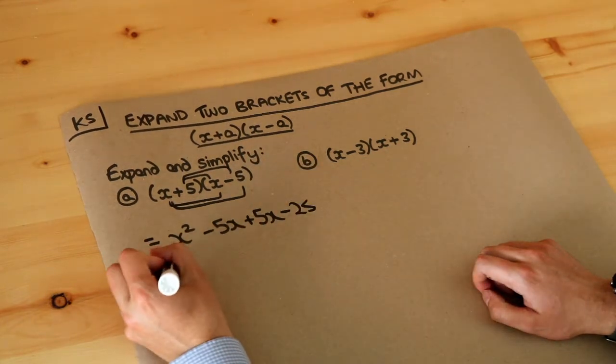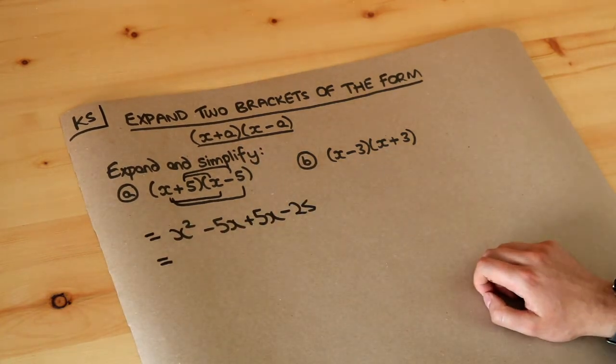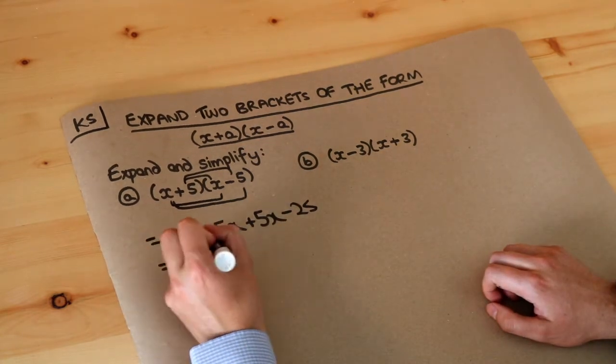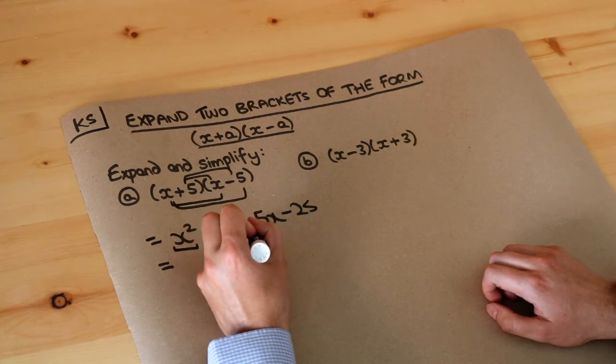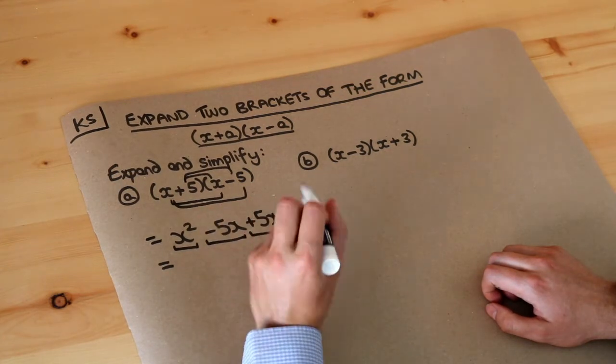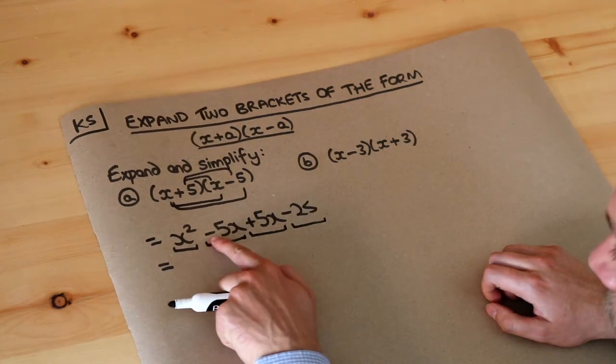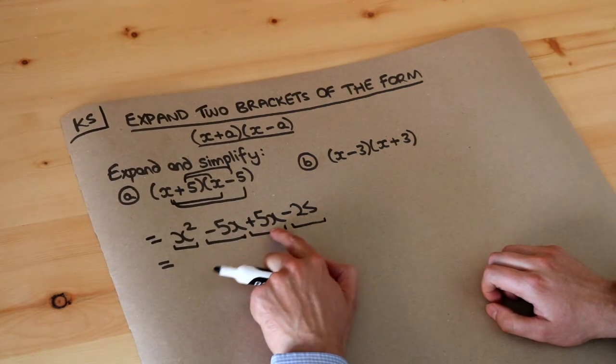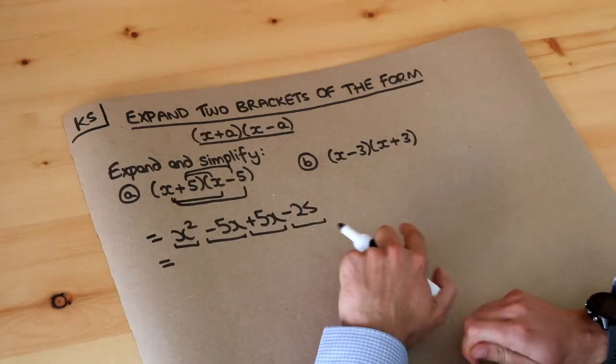Now at this point we would collect like terms. Let's underline each of the terms: we've got the x² here, we've got -5x, +5x, -25. Remember when you underline it you should include the plus or the minus in front of this algebraic term here, so -5x, +5x.